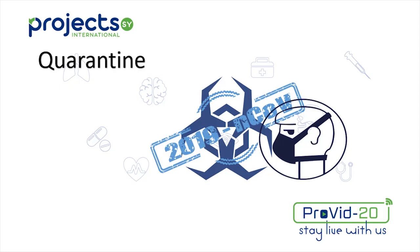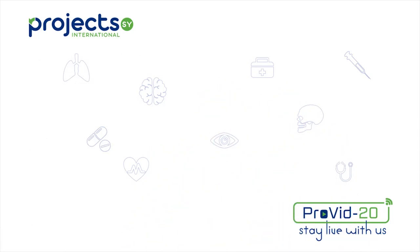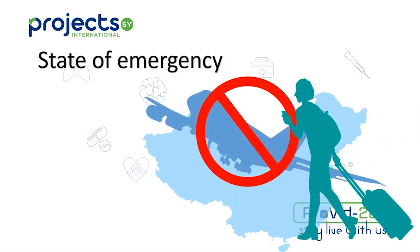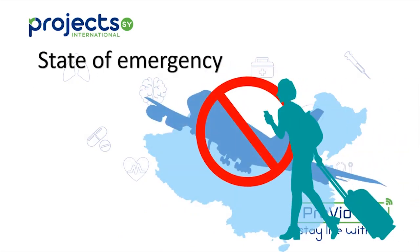Now, what do countries do in cases of having large numbers of pandemic cases? A state of emergency is declared. The state of emergency means a temporary system of rules declared by the authorities to deal with an extremely dangerous or difficult situation.